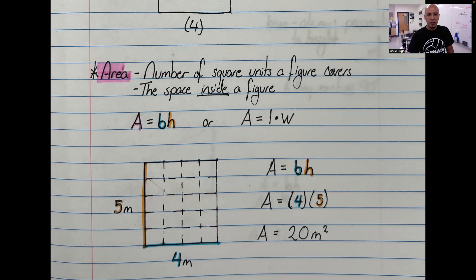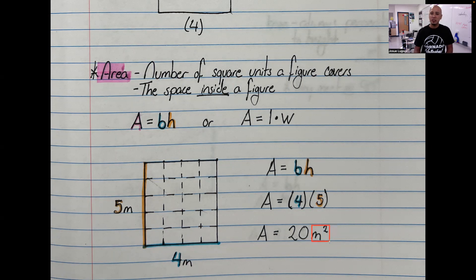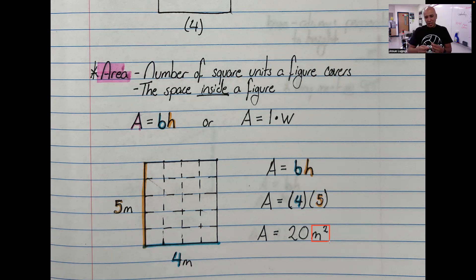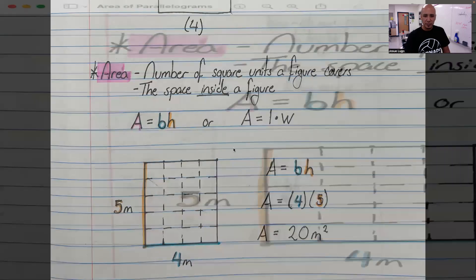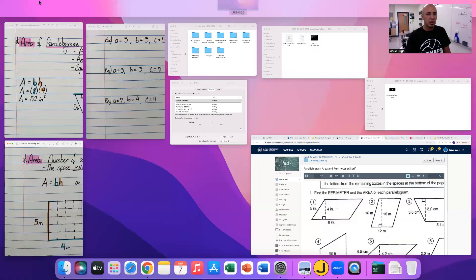You're multiplying the horizontal component by the vertical component, so the area of this shape is 20 square meters. Notice the units are not just meters — it literally means there are 20 square meters inside this shape. That is area.